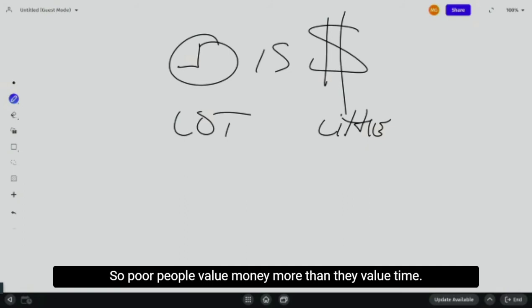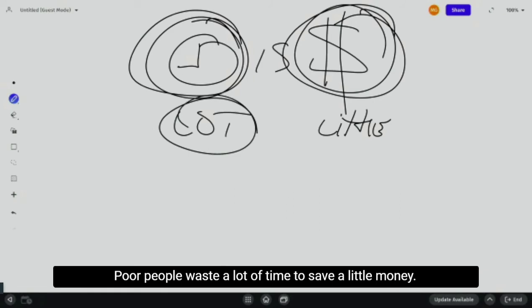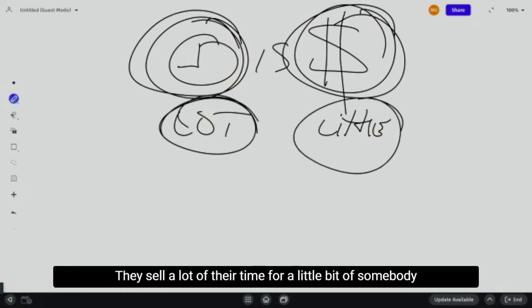So poor people value money more than they value time. Rich people value time more than we value money. Poor people waste a lot of time to save a little money. They sell a lot of their time for a little bit of somebody else's money.